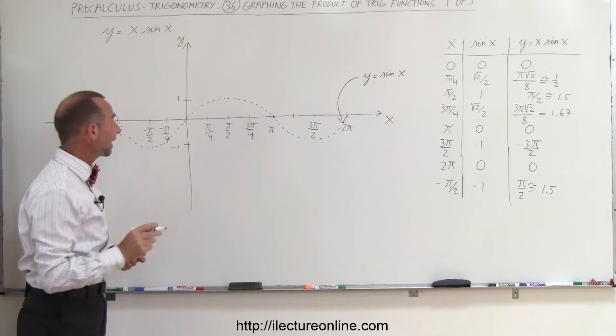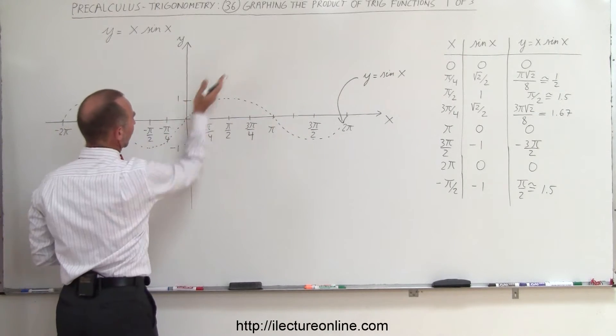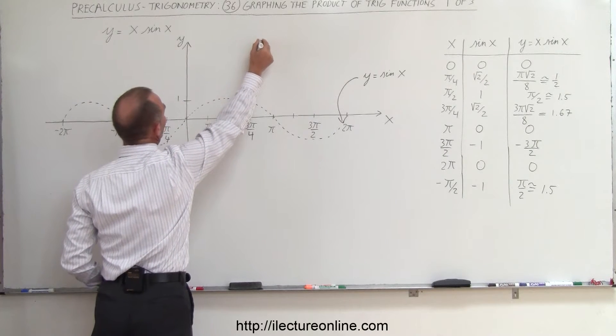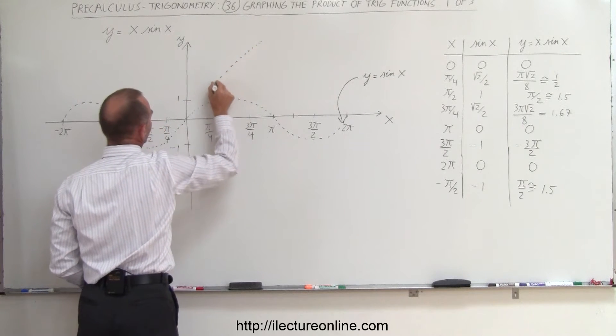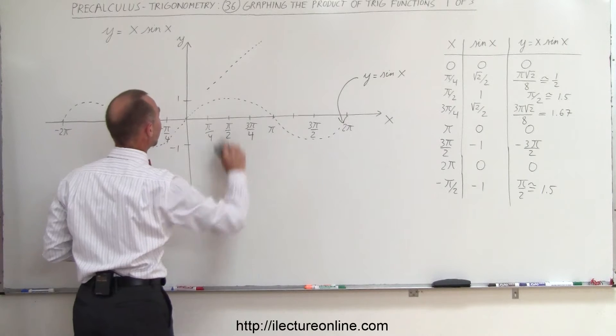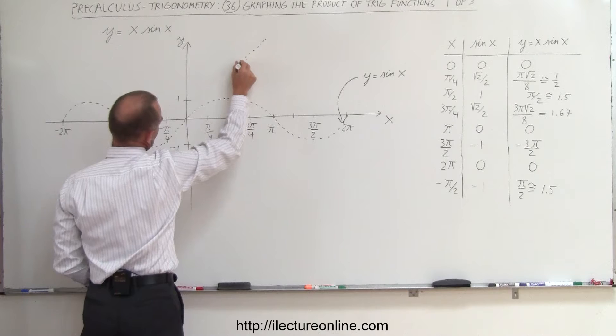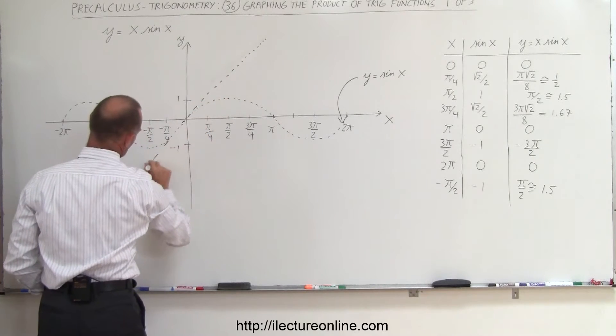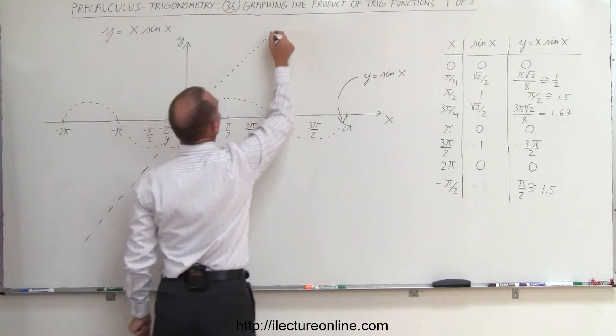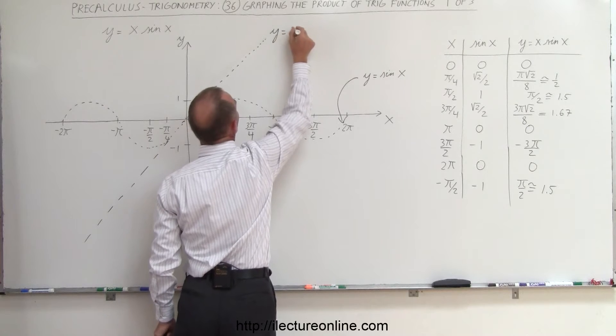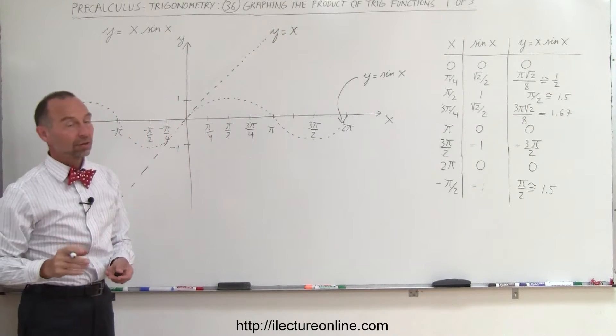Now we're going to graph y equals x. And of course that's the line that runs like this at 45 degree angle. That didn't quite make the origin. Let me try that again. All right, so this is the line that defines y equals x.